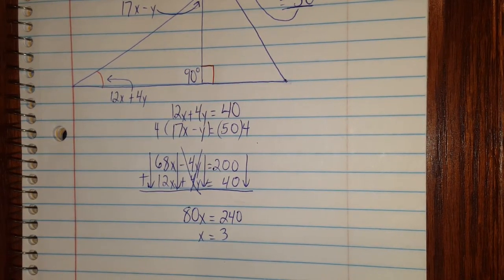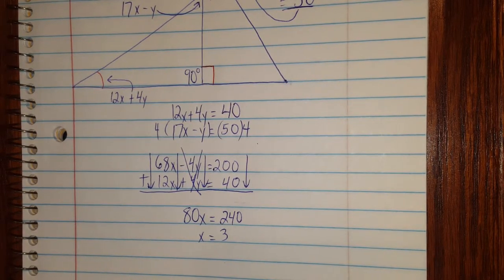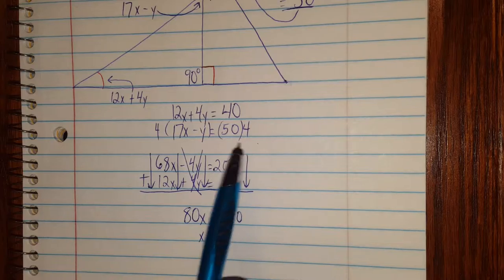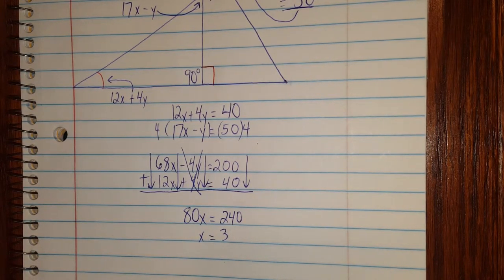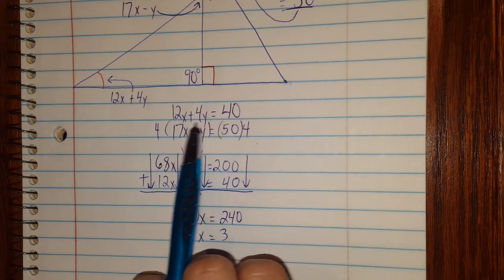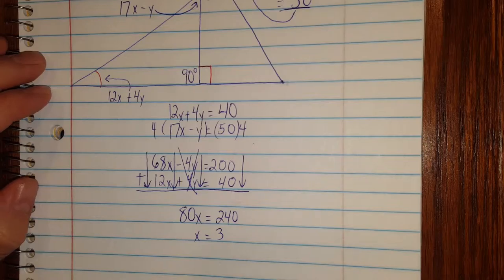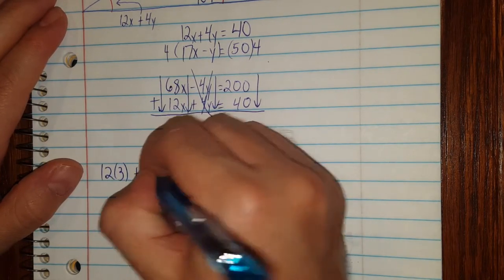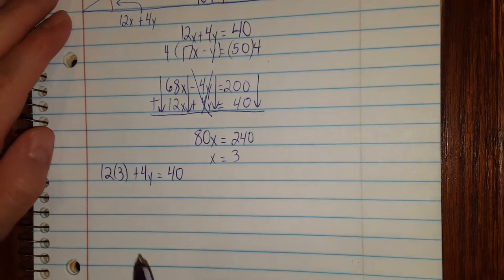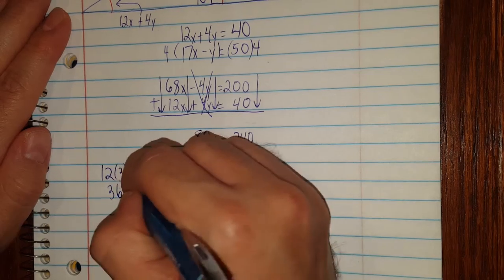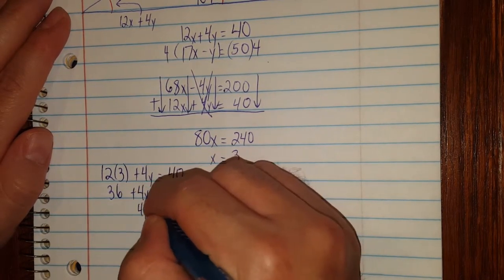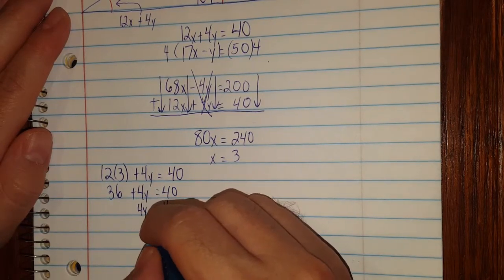So straight away I have found my value for x, and now to find the value for y, all I have to do is take this and plug it into any equation I want. I could plug it in here to this top one or here to this bottom one, or I could even use this one here if I really wanted to. Really just plug it into whichever one you think is easier. I'll just go ahead and use this one because the numbers maybe are a little bit smaller. Alright, so when I do that, this is what I will get: 12 times 3 plus 4y is equal to 40. 12 times 3, 12, 24, 36, plus 4y is equal to 40. Subtracting 36 from both sides, I get 4y equals 4, and dividing I get y equals 1.